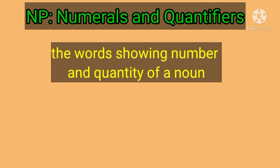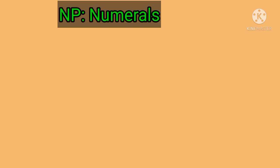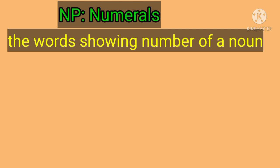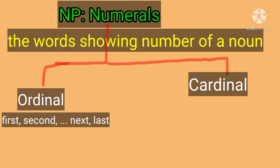Numerals and quantifiers: words showing number are called numerals and words showing quantity are called quantifiers. Many modern grammarians consider numerals and quantifiers as post-determiners. There are two types of numerals — ordinal numerals, which show order (first, second, third, fourth, tenth, hundredth, next, last), and cardinal numerals, which show number. Examples of ordinal numerals: 'The first man in the room was given an apple,' 'Monica is the second girl in the first row,' 'Adarsh is his next child after Rituja.'